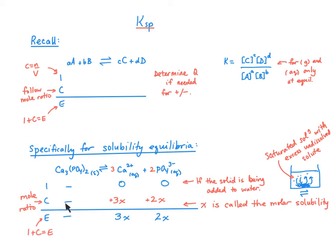Again, we follow the mole ratio for the change row, so you'll see that I have 3x and 2x from the coefficients, and you'll notice that I put a plus right away, because if I have zero here, this must be increasing. And truly, if you're putting a solid into water, even a very insoluble solid, there will be some small amount, however small it is, dissociation and dissolution of the ions.